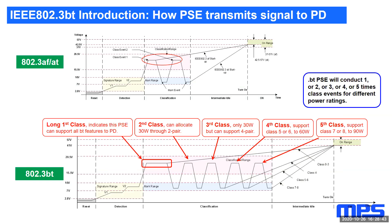This slide shows how PSE communicates with the powered device PD. First is the detection phase, where the PSE determines the impedance on the port — whether or not there is a presence of a legitimate PD. For an 802.3AF PD, the impedance is 25 kilohms. Once the device is detected, the next step is classification to determine the power level of the PD and supported features. For 802.3AF PD there are two classification events, and for 802.3BT PD there are five events.